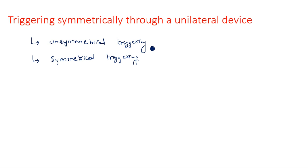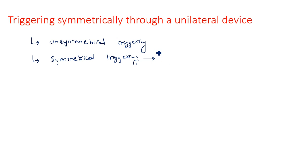In unsymmetrical triggering, two triggering pulses are needed to change the states of both transistors. If both triggering pulses are generated from the same source, then that type of triggering is called symmetrical triggering. In non-symmetrical triggering, the two triggering pulses are generated from different sources.